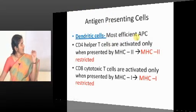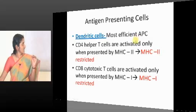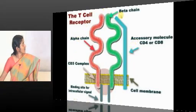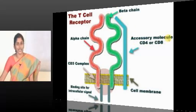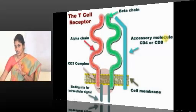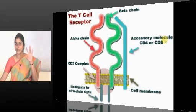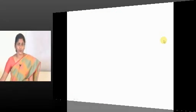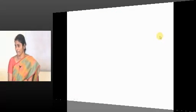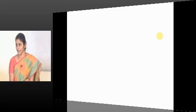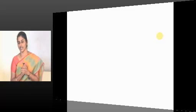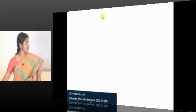Dendritic cells — note this point — are the most efficient antigen presenting cells. Regarding T cells and the T cell receptor complex: the accessory molecules CD4 and CD8 do nothing for antigen presentation, processing, or identification. They just serve as lineage markers. CD4 and CD8 are mutually exclusive — no cell should express both.